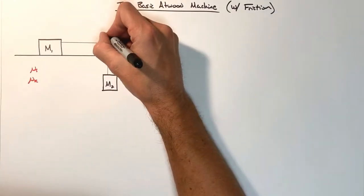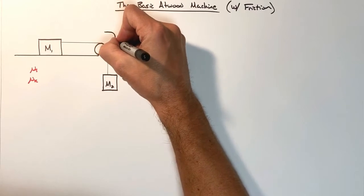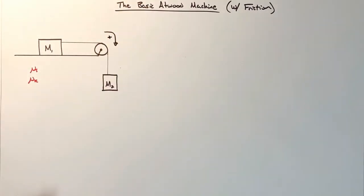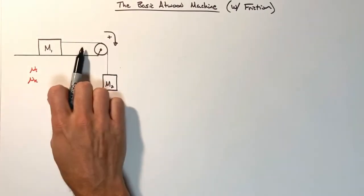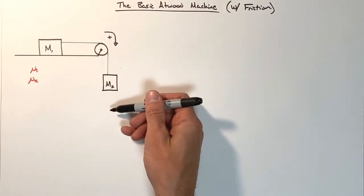The first thing we're going to do simply to keep our lives easy here is establish a positive direction of motion. This positive direction is going to be to the right for this block and downward for this hanging block.